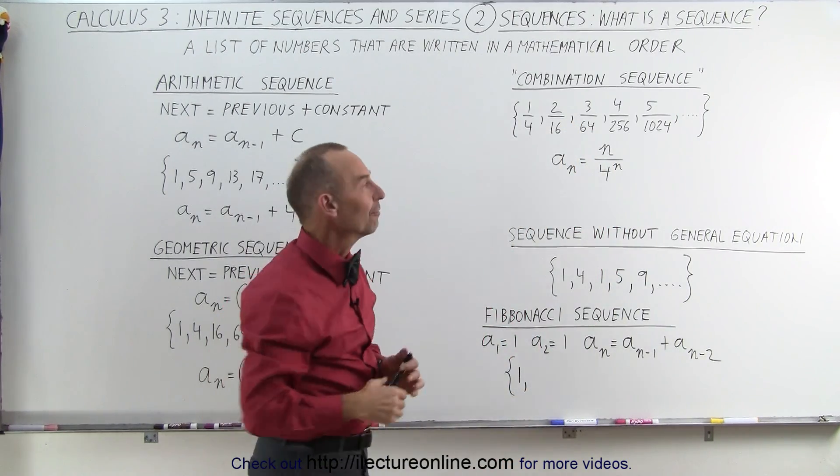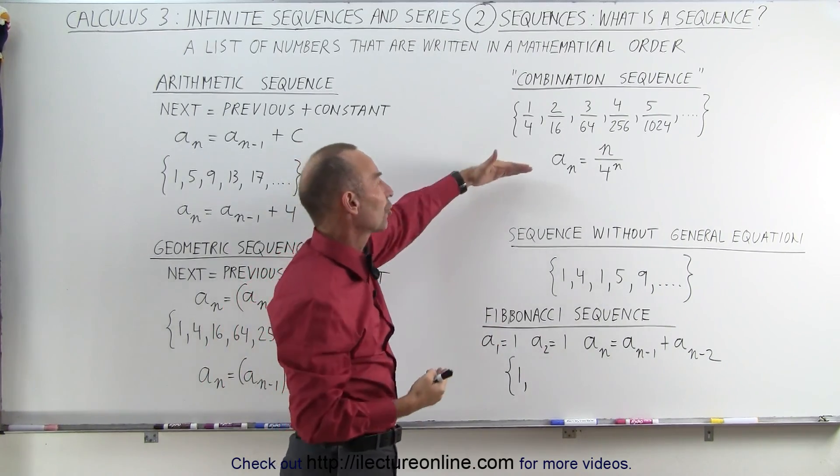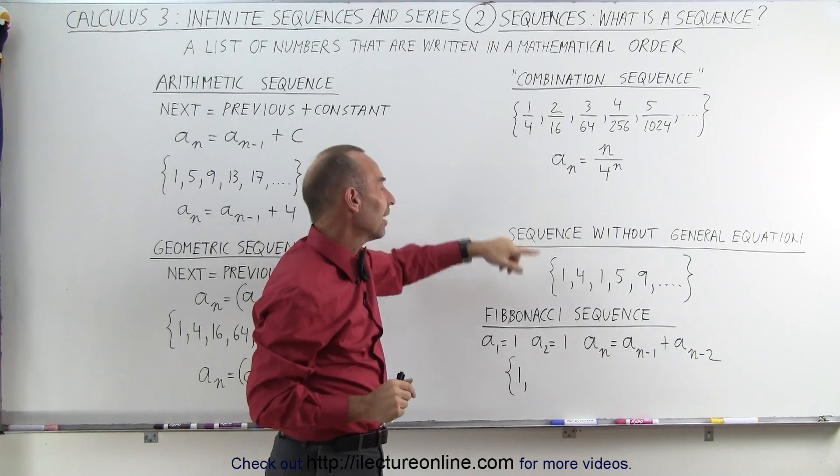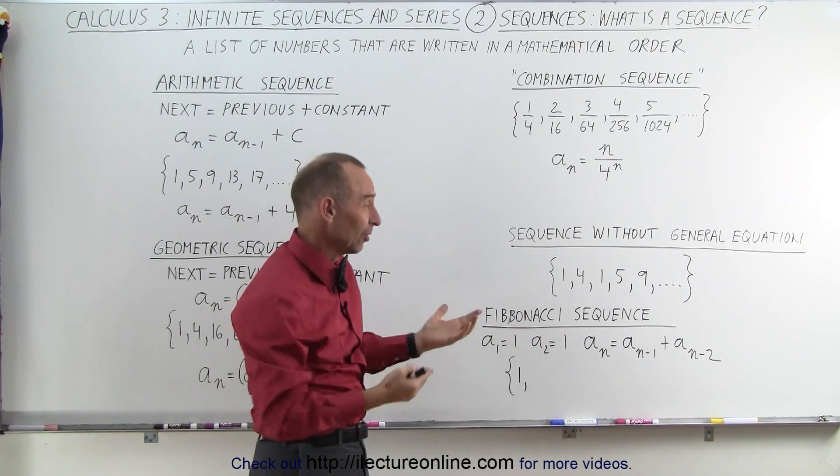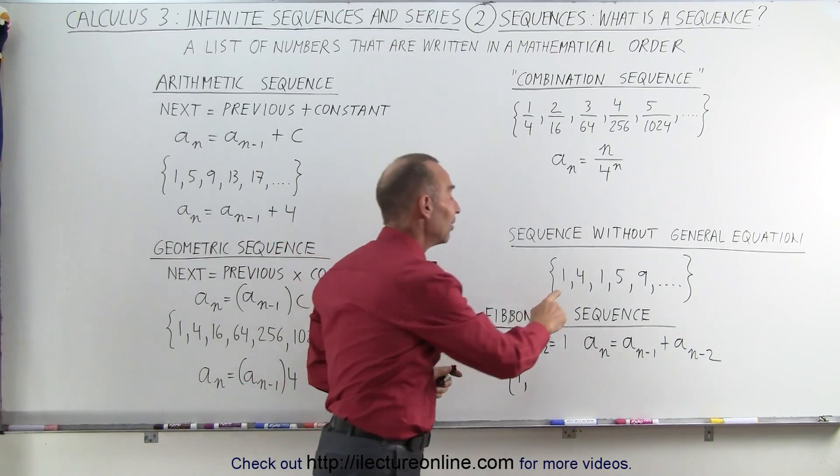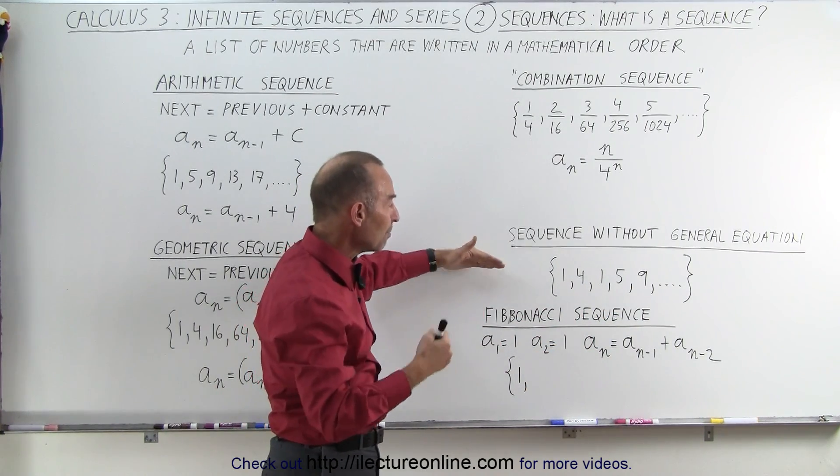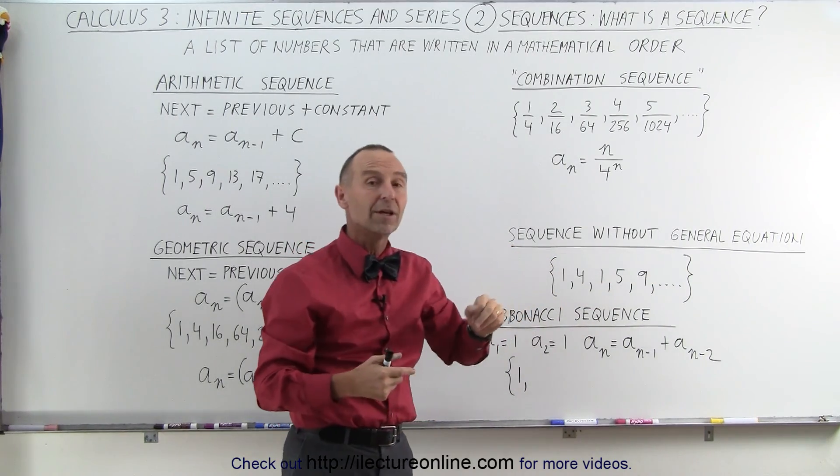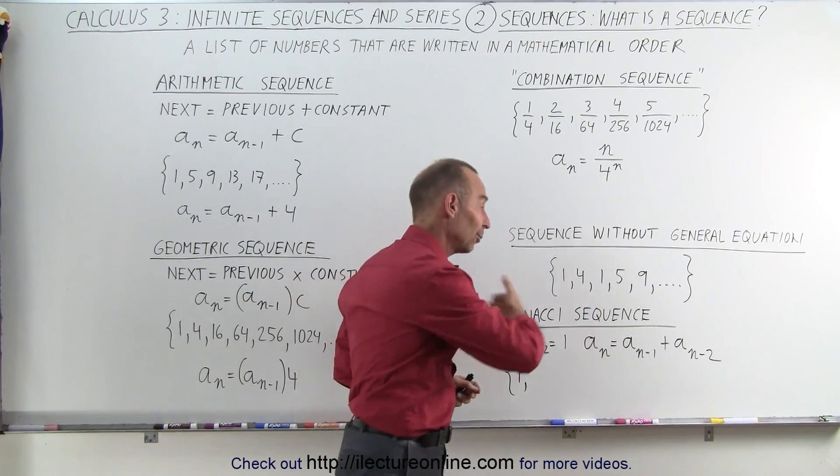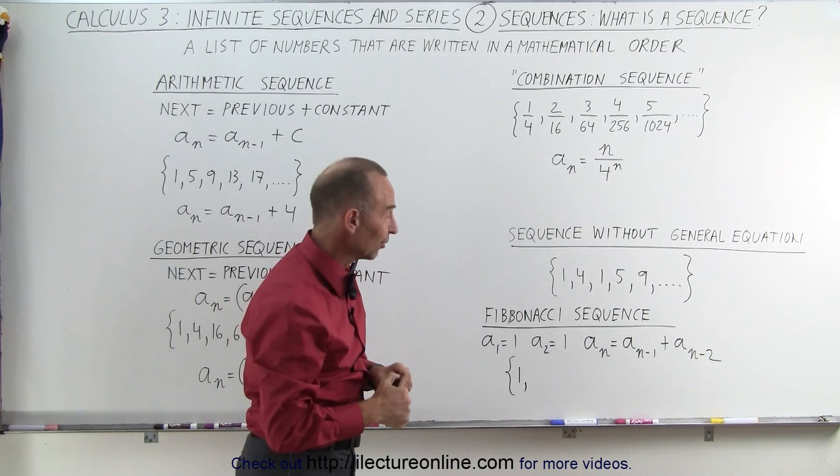And then there's sometimes sequences that do not have a general mathematical equation, but yet there is a mathematical reason for existence. Now if you look at these numbers at first, you may look at them and go, well, I don't see any particular pattern. And the answer is yes, there's no particular pattern, unless you realize that these are actually the decimal places for the number pi. Pi is 3.14159 and so forth, so we can call a sequence simply the decimals of the number pi. And of course, with some very powerful computers, we've calculated that to over a million decimal places so far, probably more than that.